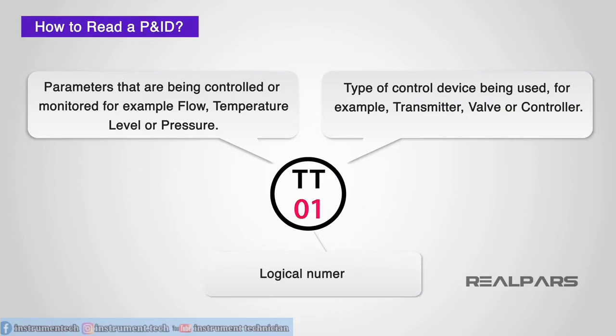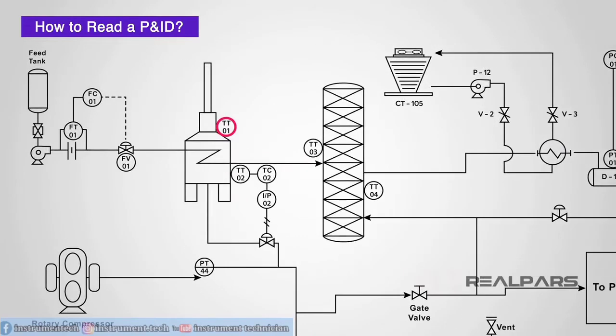The number refers to the logical numerator. For example, we may have a system with four temperature transmitters. It makes sense to identify these as TT01, TT02, TT03, and TT04.